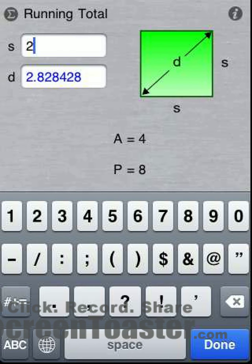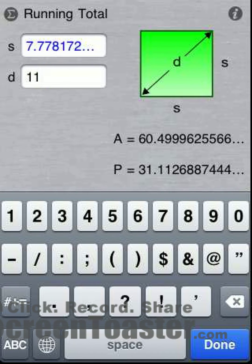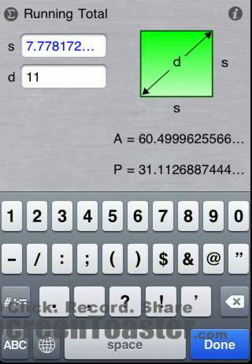Watch how easy it is to enter diagonal length. Notice how the calculator clears the other input box and calculates the area, perimeter, and side length.